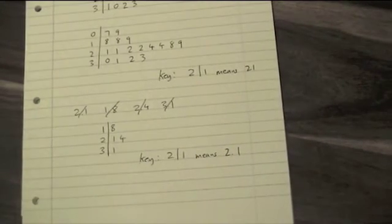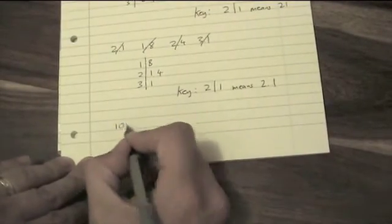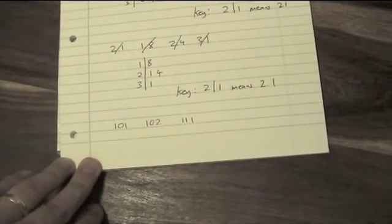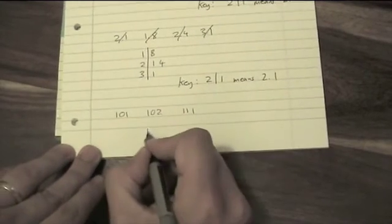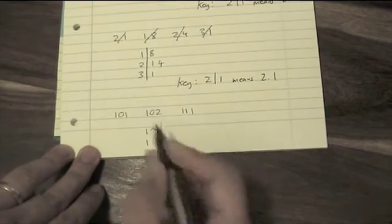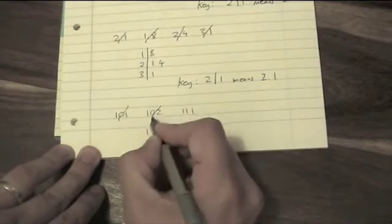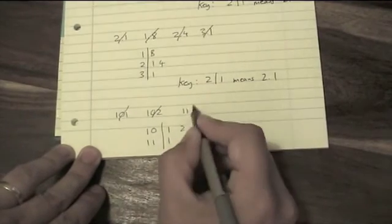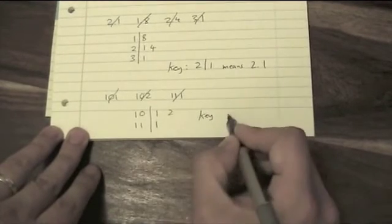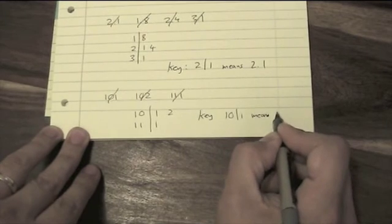The only other thing you might ever see on this is you could have numbers like this: 101, 102, 111, and so on. What you would have is the stems would be 10 and 11, and you would write a 1 next to the 10 for that one, a 2 next to the 10 for that one, a 1 next to the 11 for that one, and your key. Just to give an example, 10/1 means 101.